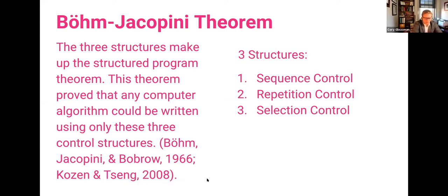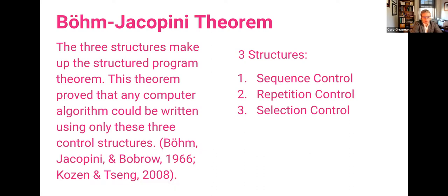Back in 1966, a research paper referenced the Bohm-Jacopini theorem, where three structures of programming make up all programming languages and anything that can be built using block-based or text-based programming. These three control structures are sequence control, repetition control, and selection control. These concepts take different forms depending on what language you're using, but the foundational concept is in all programming languages. Even if you're not an expert programmer, you can think in computer science terms.